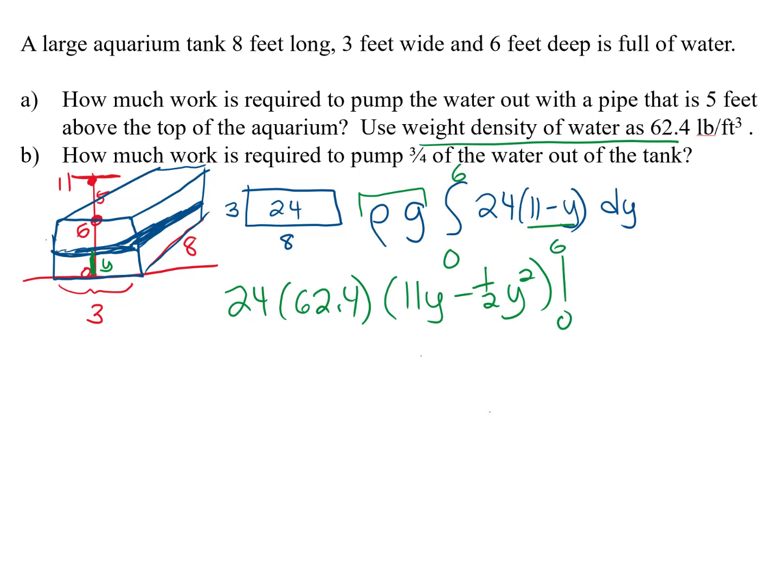Let's go ahead and do that evaluation. If we multiply 24 by 62.4, we get 14,976, and then we've got 66 minus 36 halves, which is 18. So that's going to be 48 multiplied by that number in front there, and we're going to get 718,848 foot-pounds.